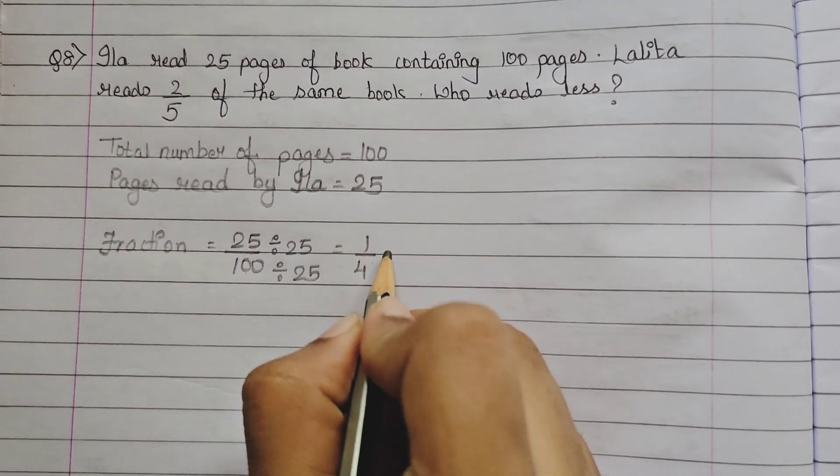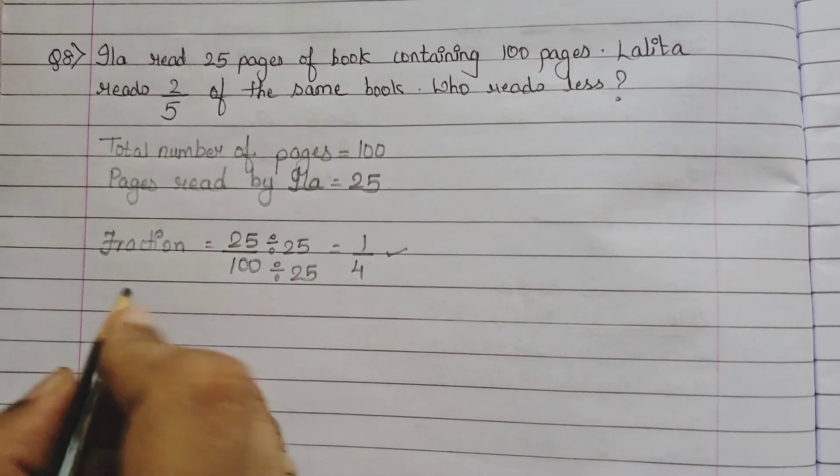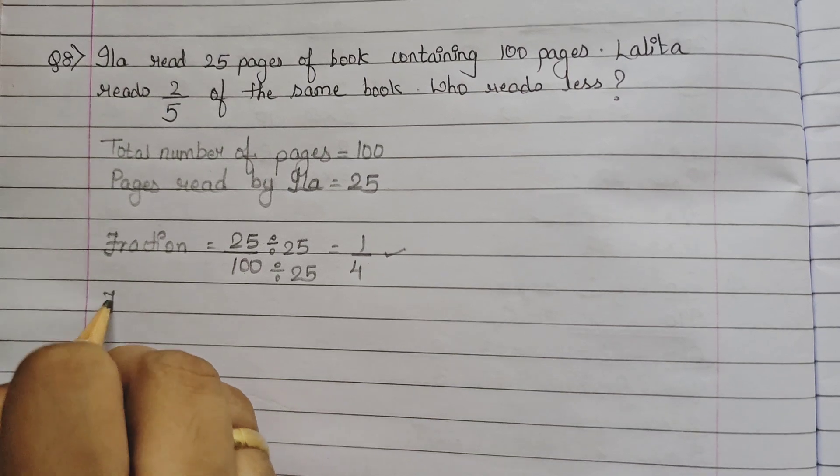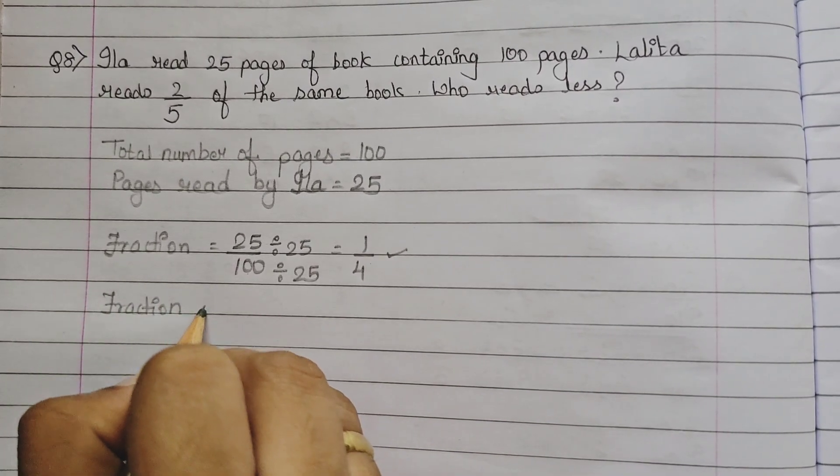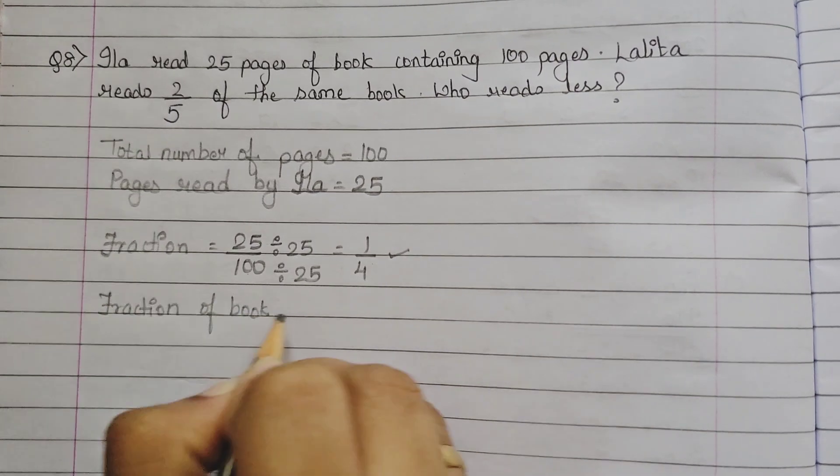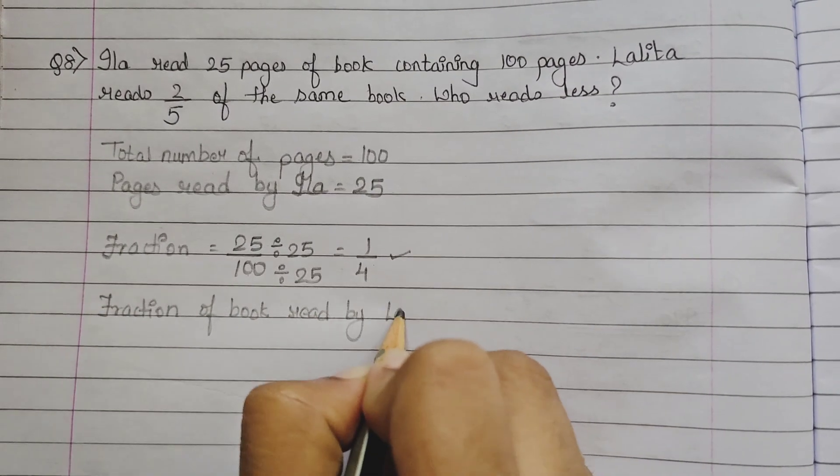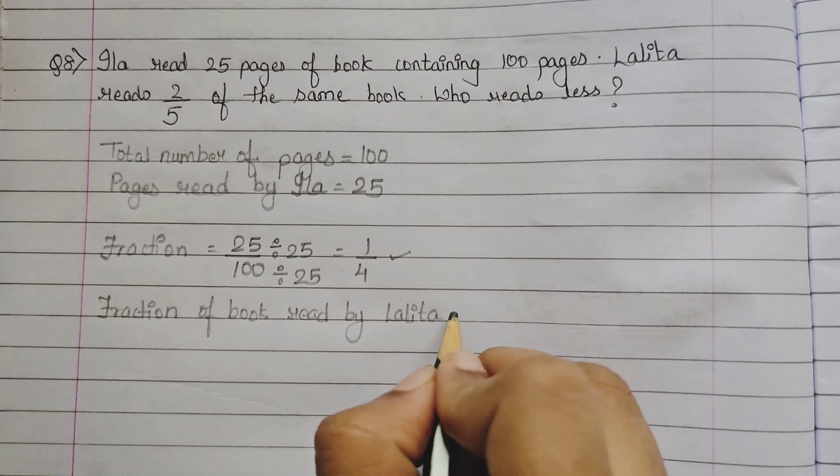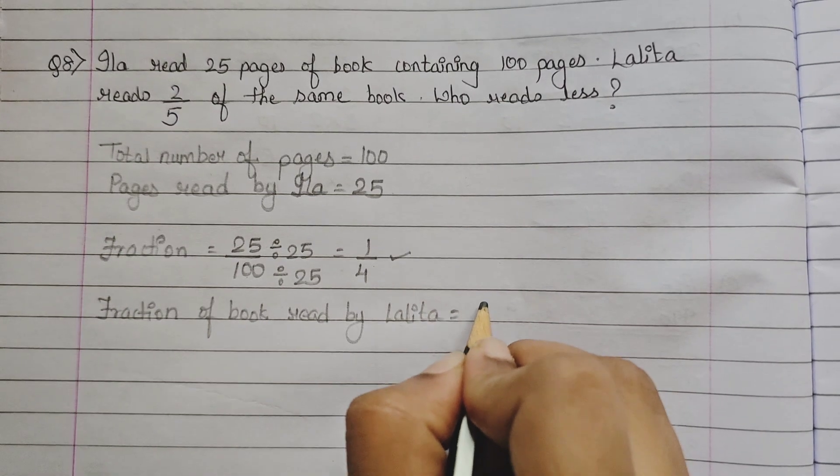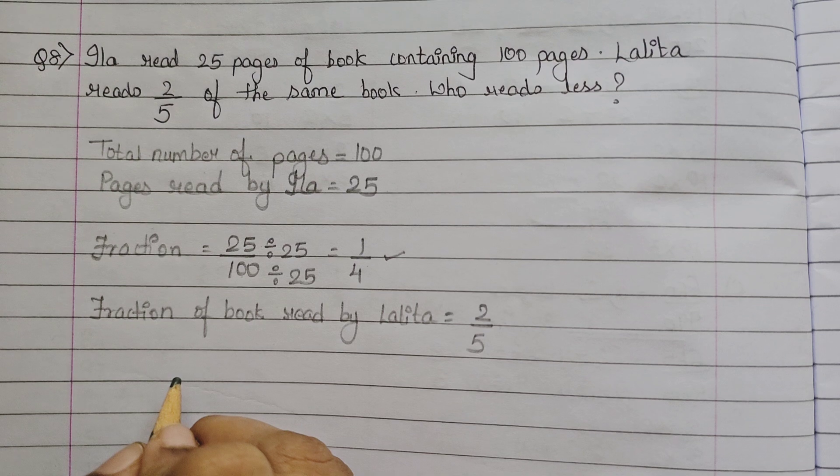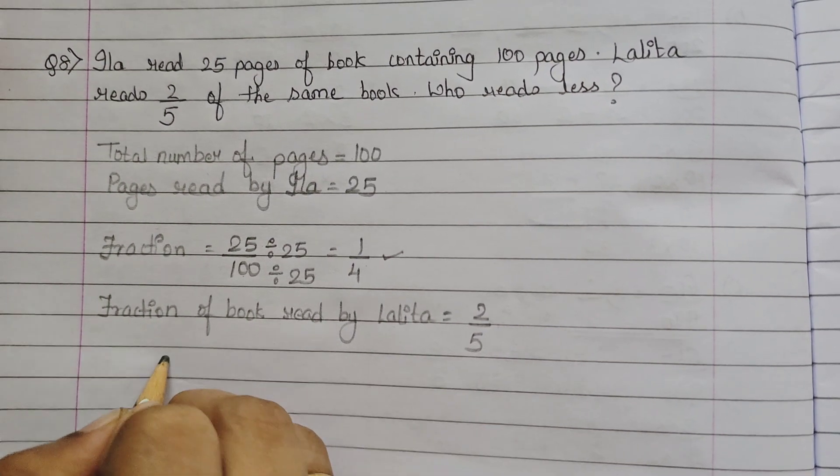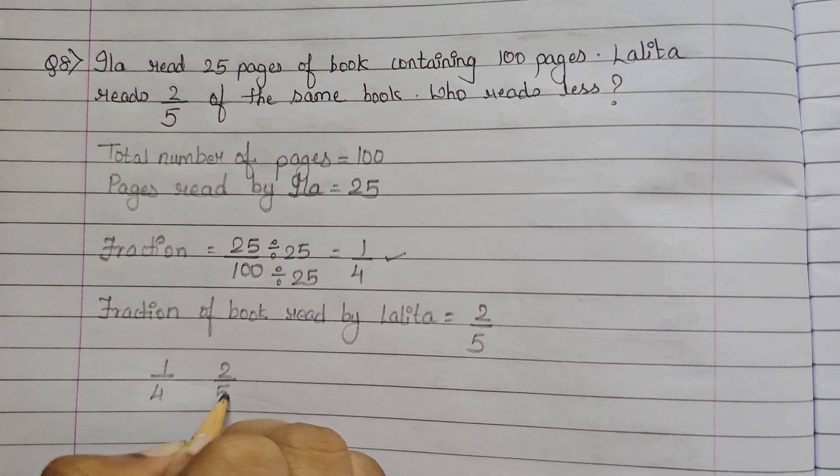Now, you have the fraction for Ila and the fraction of the book read by Lalita. It is 2 upon 5. Now, you simply have to compare the two given fractions, 1 upon 4 and 2 upon 5.